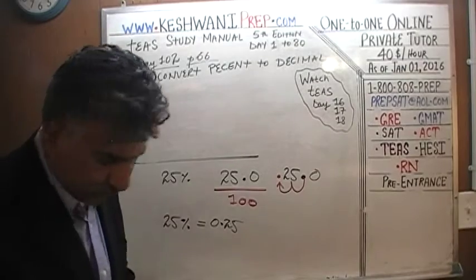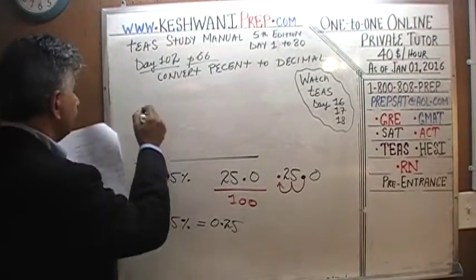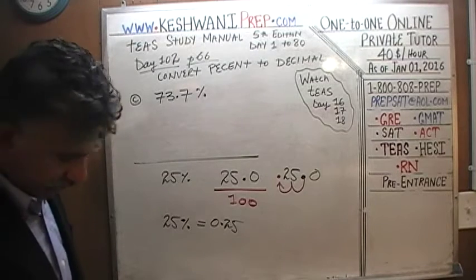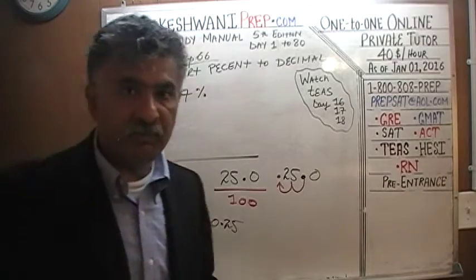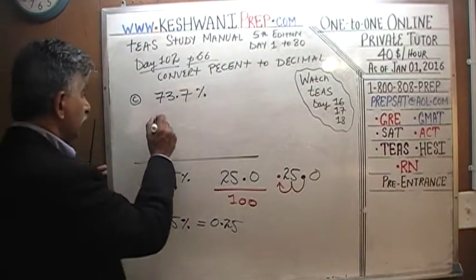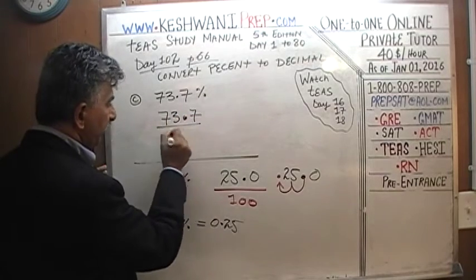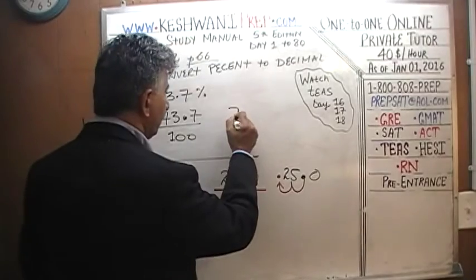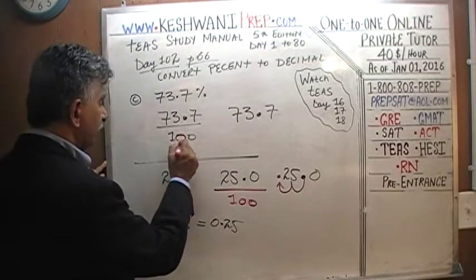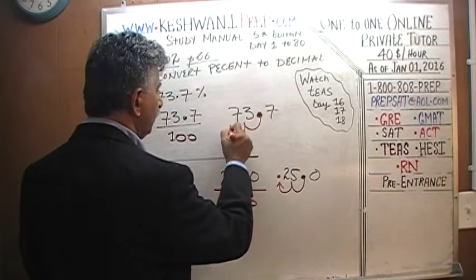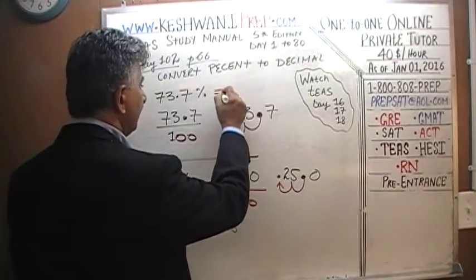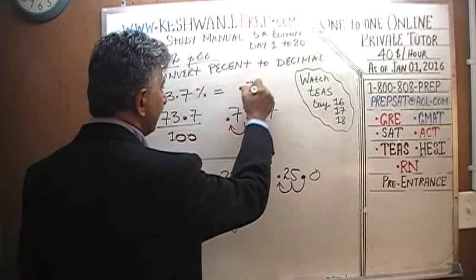The first problem given in the book is Part C: 73.7 percent. Nothing has changed — same concept. We take 73.7 and divide by 100. The decimal already exists after the 7 in 73.7. Since 100 has two zeros, we move the decimal two spots to the left: one and two. It ends up giving us 0.737. So 73.7 percent expressed as a decimal is 0.737.